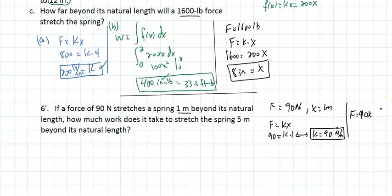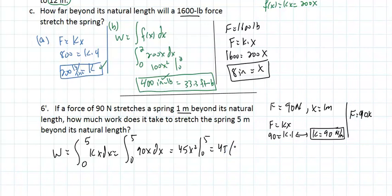The force for this problem is 90x. How much work does it take to stretch the spring 5 meters beyond its natural length? The integral from 0 to 5 of 90x dx equals 45x² evaluated from 0 to 5, which is 45 times 25, giving 1125 joules.